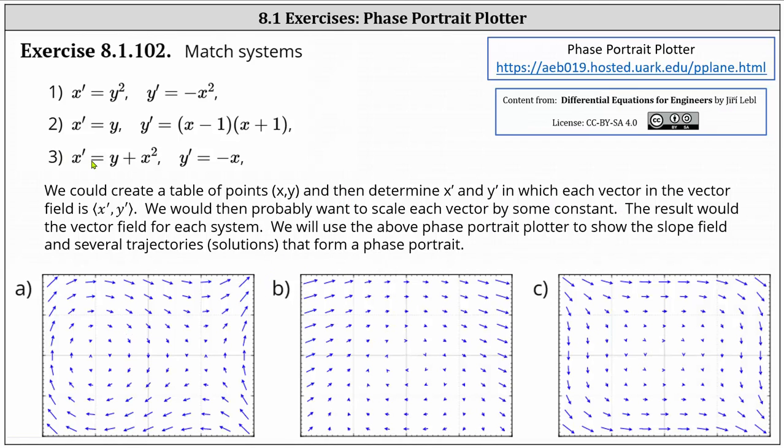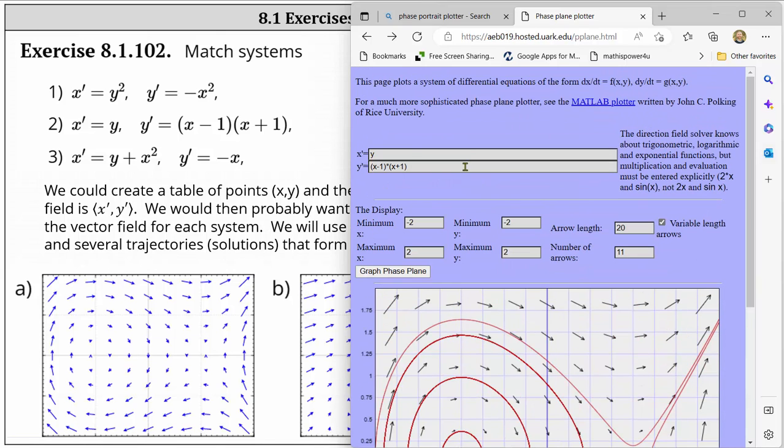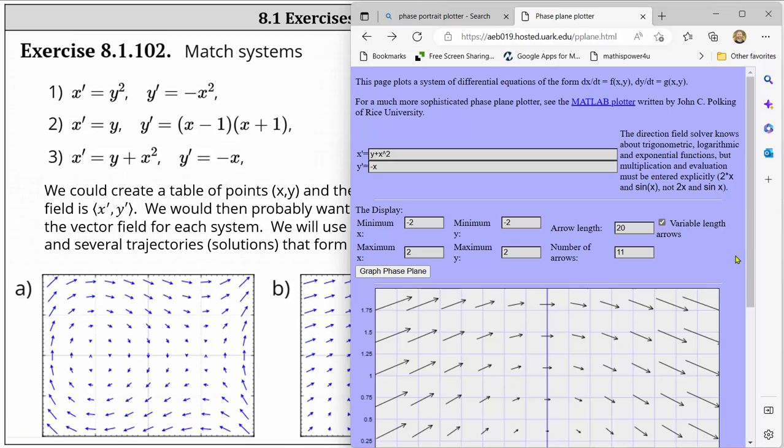Of course that means that number three is going to match with the vector field b. But let's go ahead and practice graphing it. Scroll back up. Enter x prime equals y plus x squared tab. Y prime equals negative x. Graph phase plane.